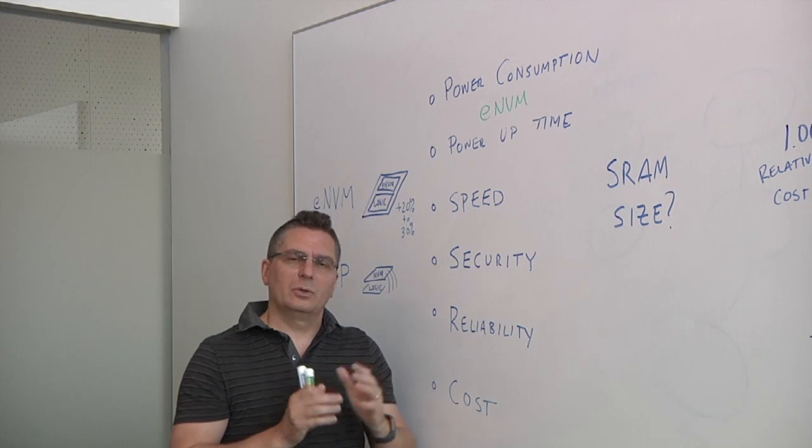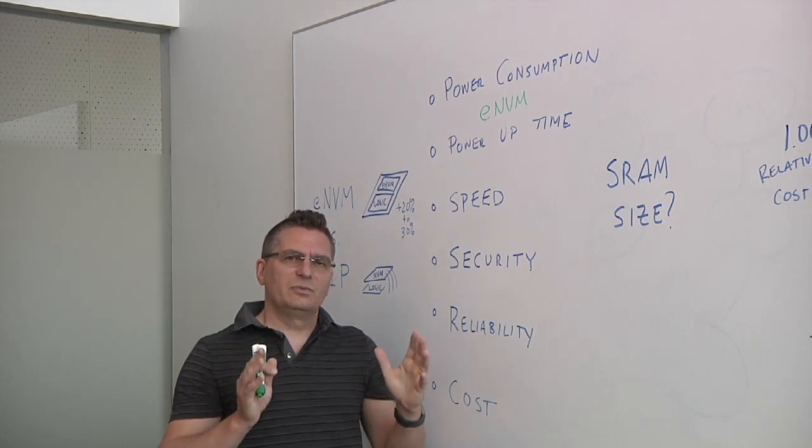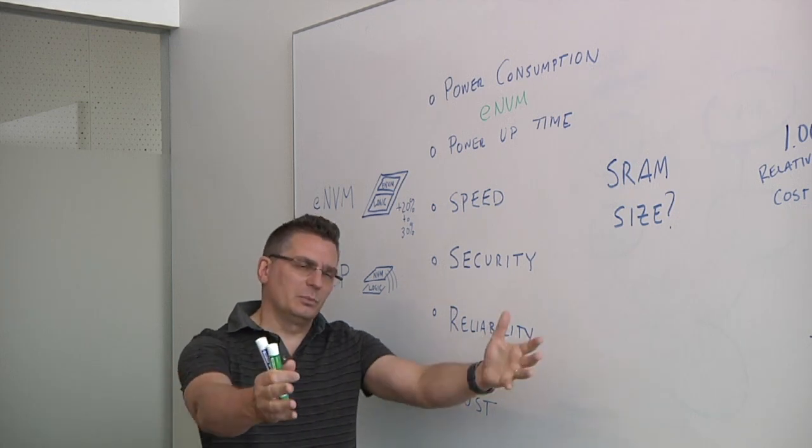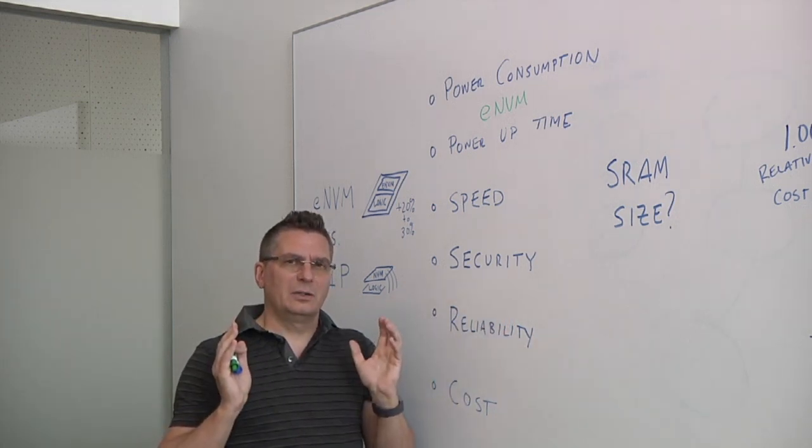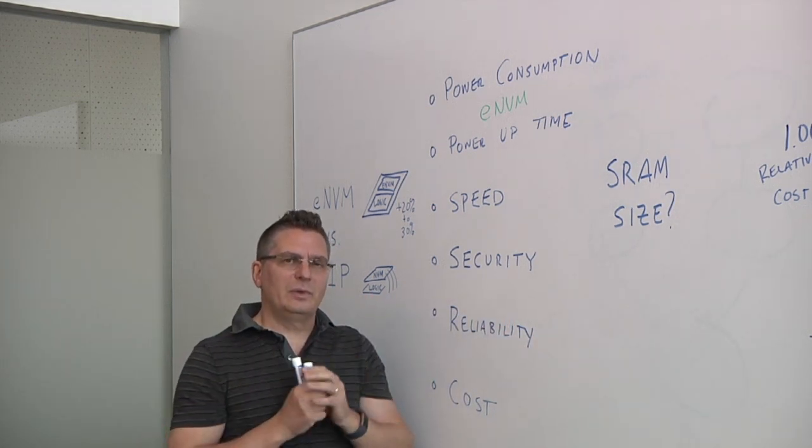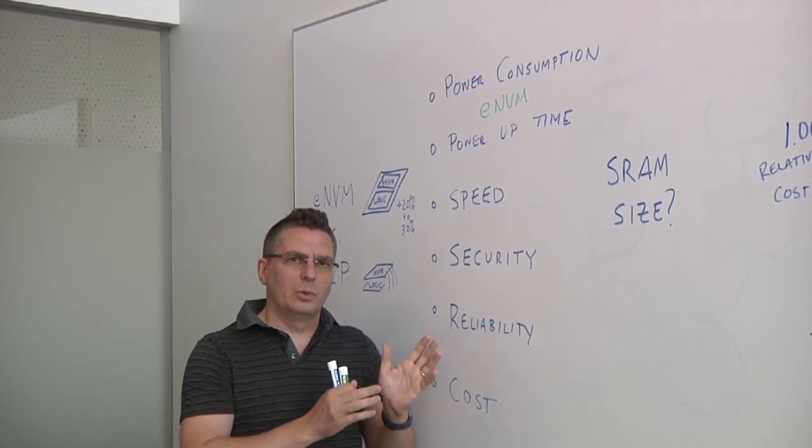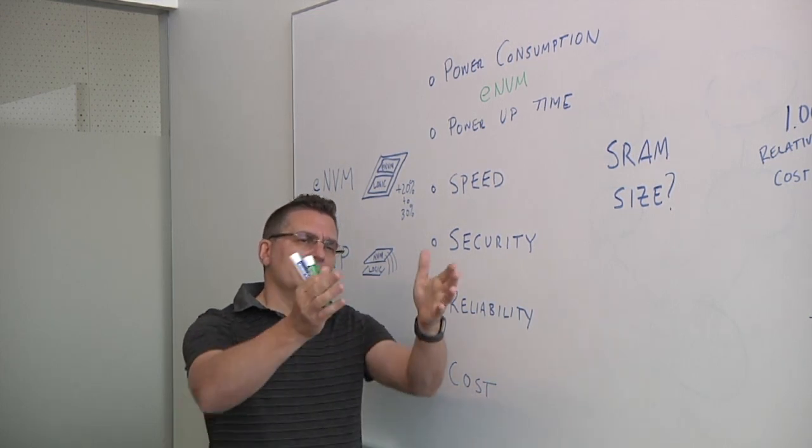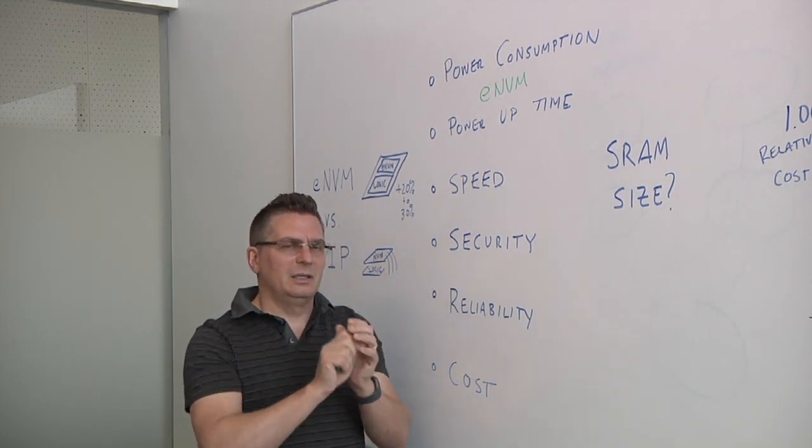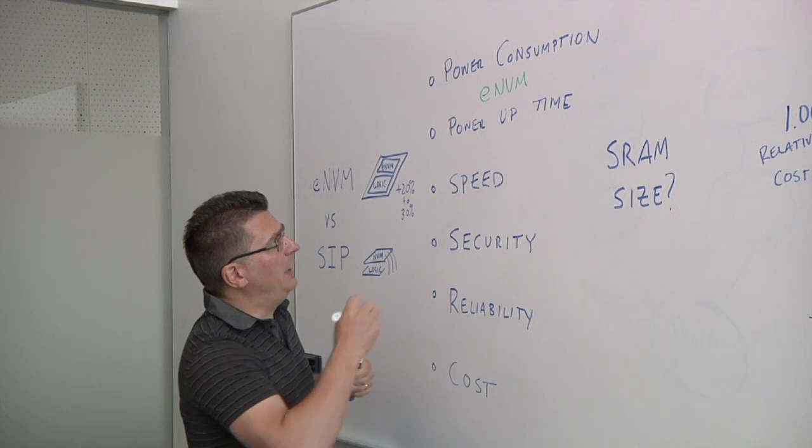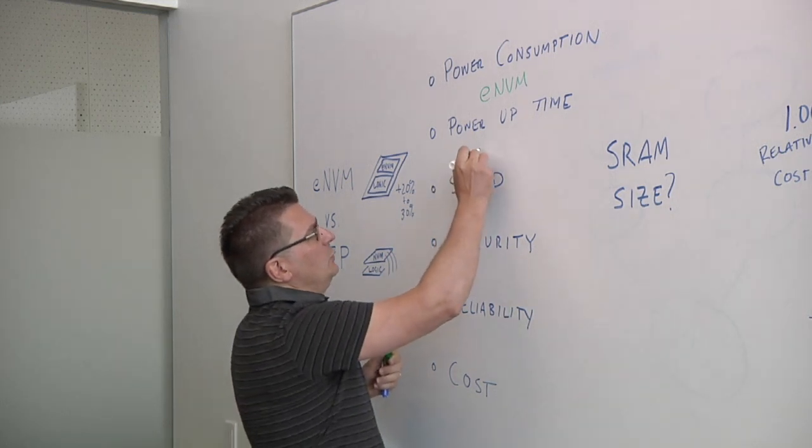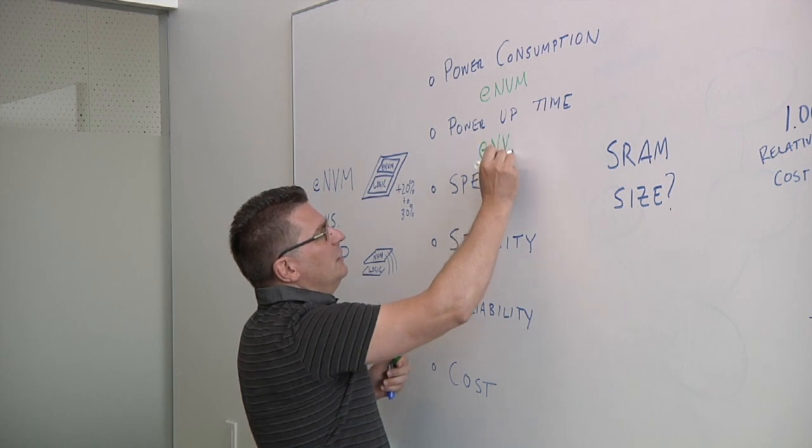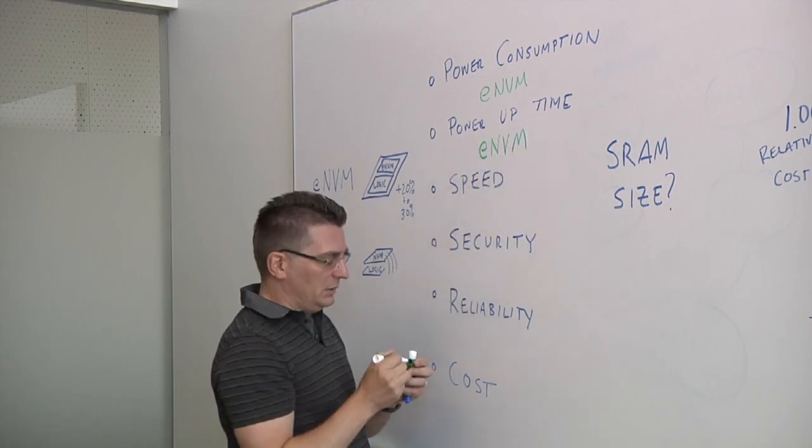Also, the embedded NVM macros are often 64-bit wide buses or 128-bit wide buses. So we can bring in a lot of data in one cycle. The external NOR flash often is a by four or by eight bus in order to keep the power consumption down on the IOs. So we can only bring a little bit of data in at a time. So again, for power up time, if you want something that's measured in the single digit microseconds, then embedded NVM is going to be your choice.